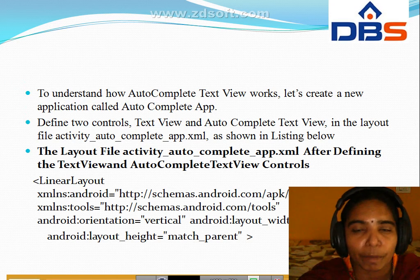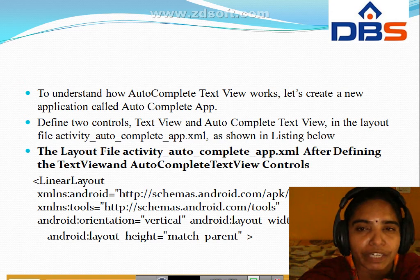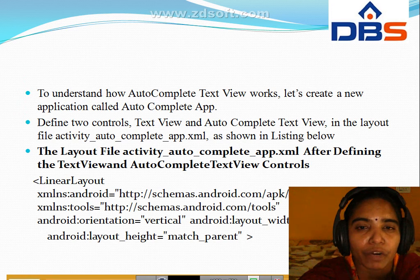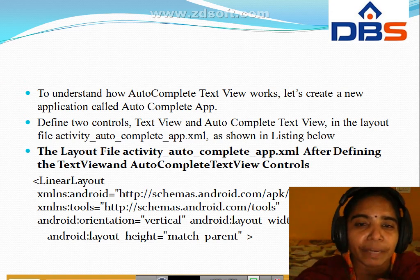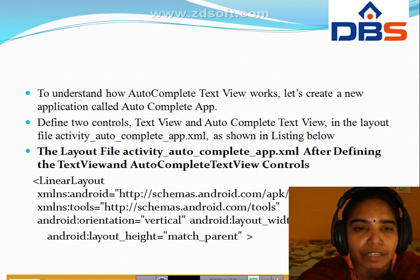How to create a new application — that application is called auto complete app. In that auto complete app, you have to define two controls: text view and auto complete text view in the layout file activity. The file name is auto complete app dot XML. This is the code for the auto complete app.